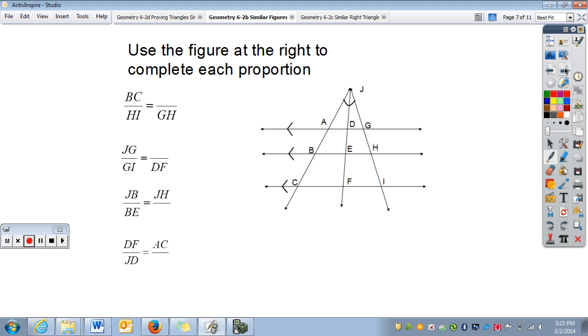Using that, we can complete each proportion. We have BC, HI, and GH. Looking here, we have BC here. We have HI here. So, GH. Then this needs to be AB.